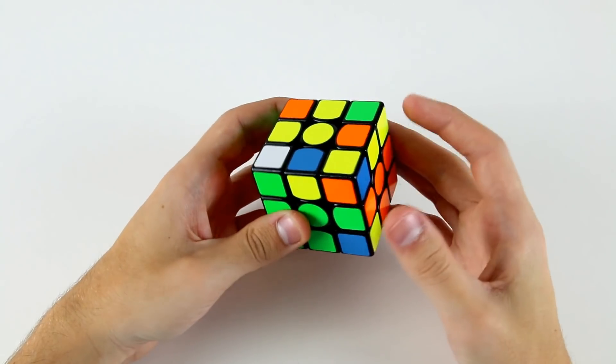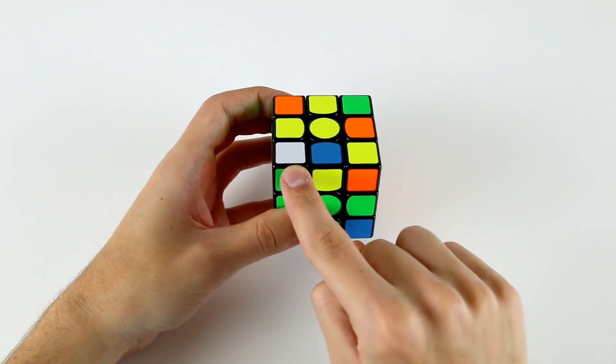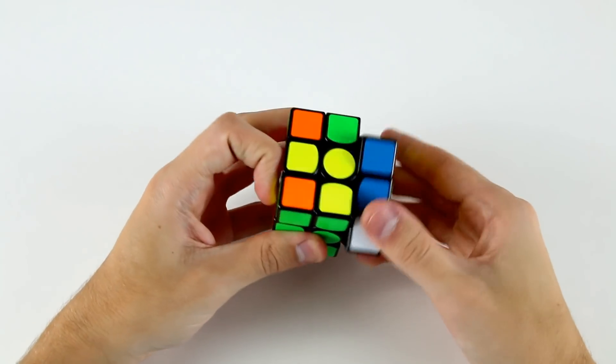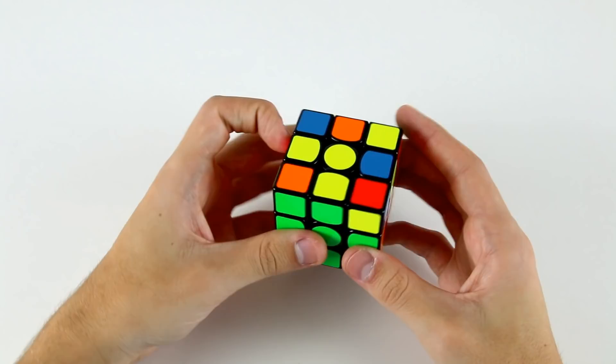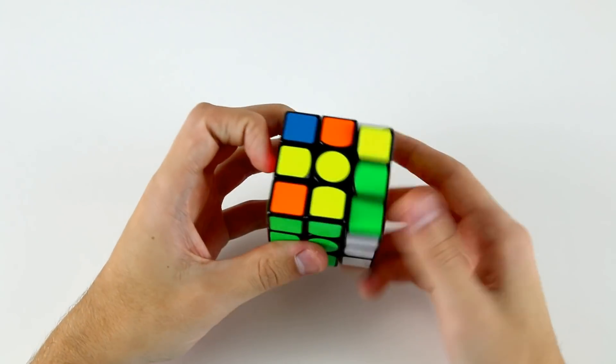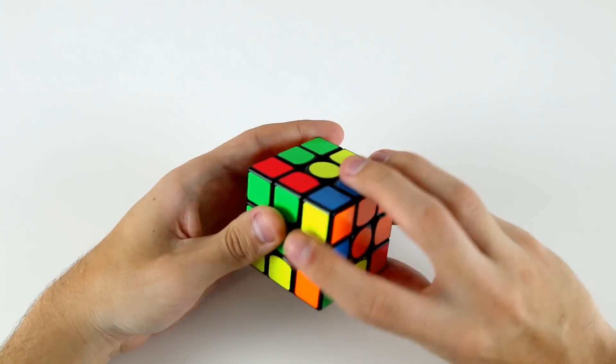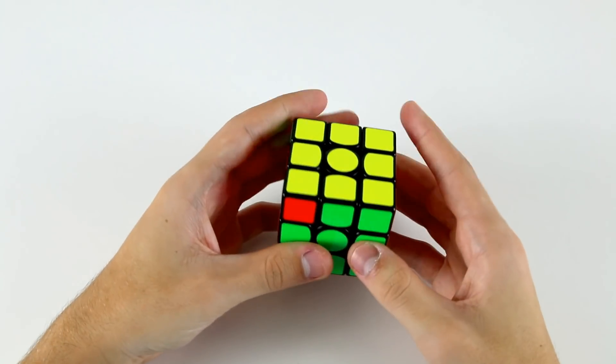I would probably break them up like that and then insert, and then we've got this last F2L pair where the edge is inserted and we've got this one with the white sticker on top. Like that. Now we have OLL and PLL.